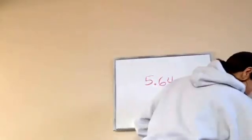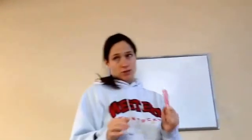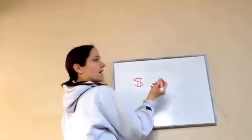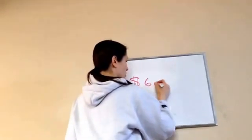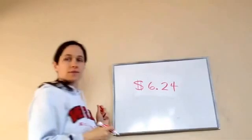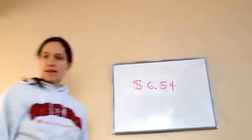Fifth grade, lesson 64, and this is using money to model decimal numbers. Let's write down this right here. Let's say $6.24. Let's do $0.54. I want to show you something. Write that down on your paper.